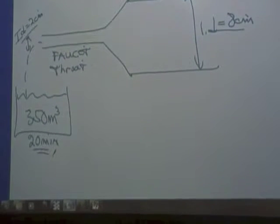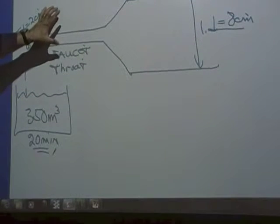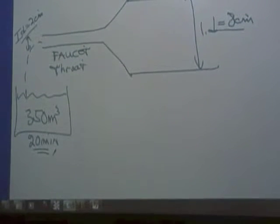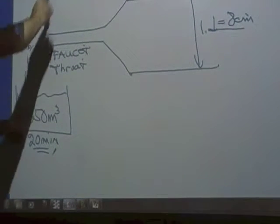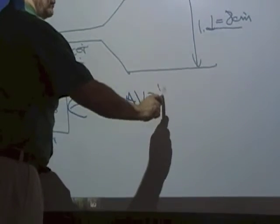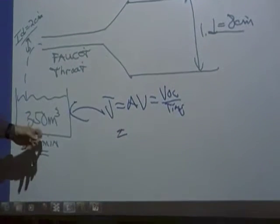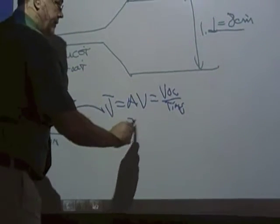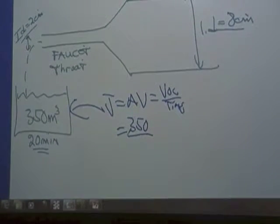What can we solve based on this? Flow. We can find flow, obviously, just looking at the pool. Can't find pressure yet. We can find V in the throat and V in the main. So first we're going to get the flow. J is equal to AV, but it's also equal to volume over time. Which one are we going to use? Volume over time. Someone get a calculator. So, I'm thinking 350 over 20 times 60. We don't like minutes. 1200.